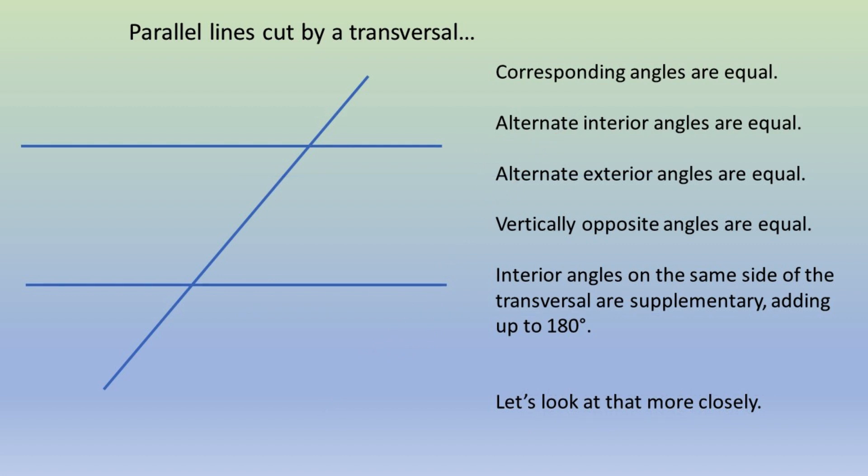With parallel lines cut by a transversal, corresponding angles are equal. We can see them here on the left side of each line and on the opposite side of the transversal.